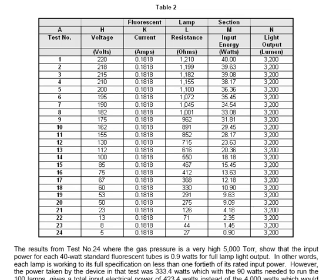The voltage starts off with 220 volts, and that's 40 watts of energy going into the tube to give 3,200 lumens coming out. As the voltage is decreased with the number of tubes being put across it, you eventually get down to only 5 volts being applied across the tube, and you're still getting 3,200 lumens.